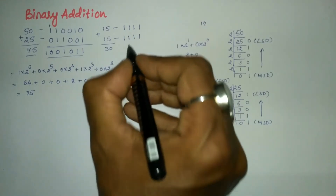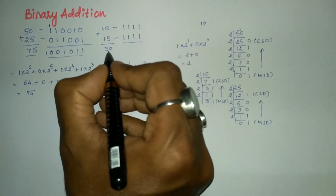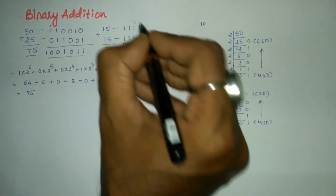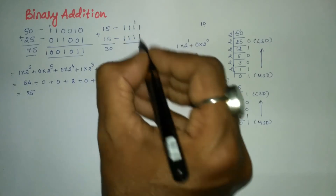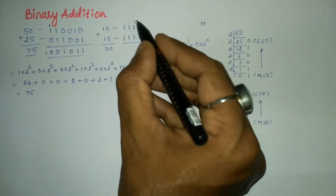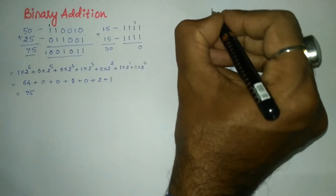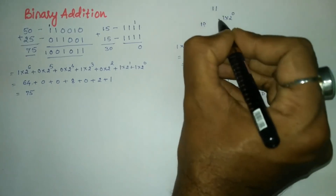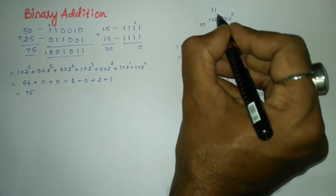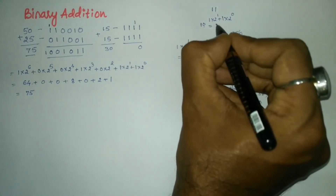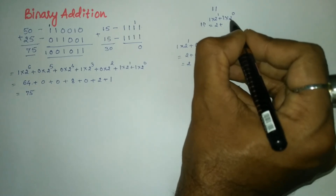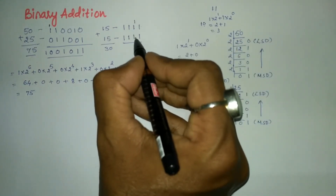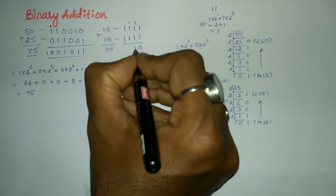We add 1 1 1 1 plus 1 1 1 1 and expect a result equal to 30. Adding from the right: 1 plus 1 is 2, written as 1 0, so carry is 1 and sum is 0. Next column: 1 plus 1 plus carry 1 equals 3. Since 3 in binary is 1 1, carry is 1 and sum is 1. We can verify: 1 into 2 to the power 0 is 1, plus 1 into 2 to the power 1 is 2, giving 2 plus 1 equals 3. So 1 1 in binary equals 3.